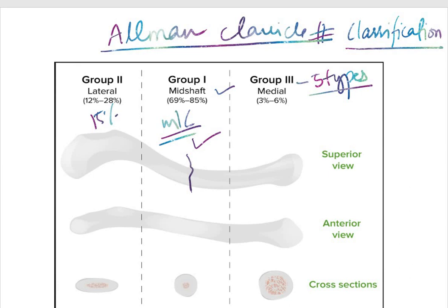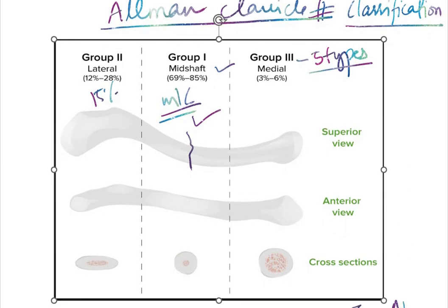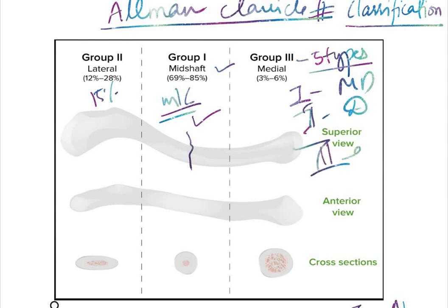And Group 3 is further divided into five types. Type 1 is minimally displaced. Type 2 is displaced. Type 3 is intraarticular. Type 4 is epiphyseal and type 5 is comminuted type.